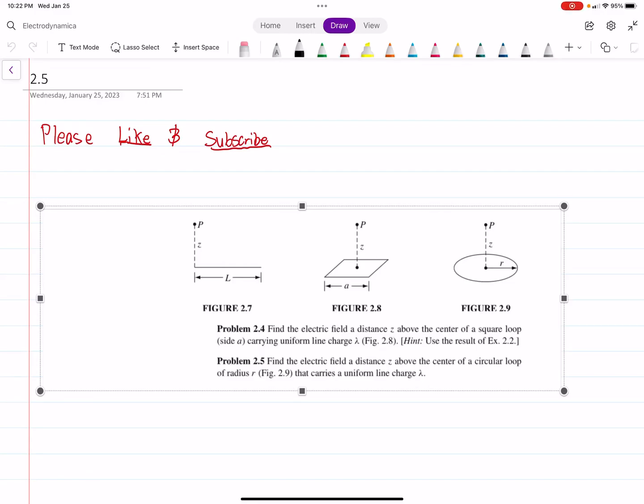Alright, so we are going to do problem 2.5 out of Griffiths. We're going to find the electric field above the center of a circular loop with uniform charge density.